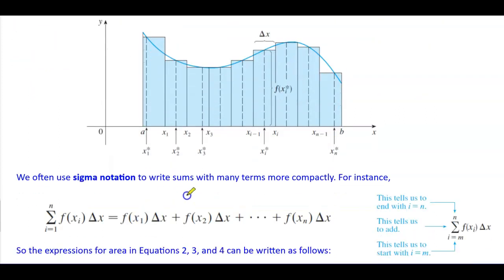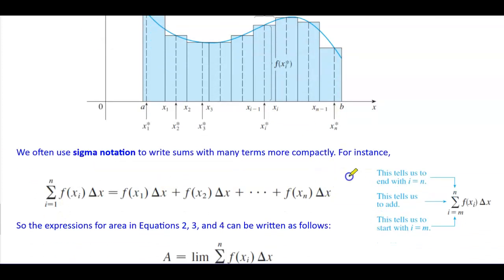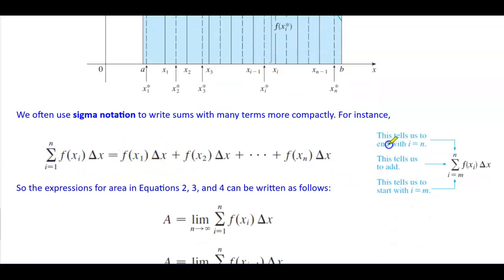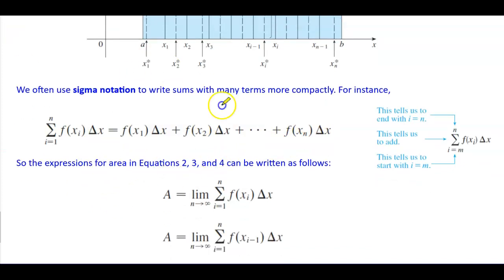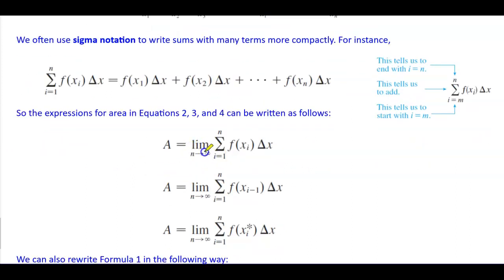We often use sigma notation to write sums with many terms more compactly. The summation notation has the upper limit n — telling us to end with i equal to n — the sigma sign telling us to add all terms, and the lower limit i equals m telling us where to start. The summation from i equals 1 to n of f(x subscript i)·Δx equals the height times the width, plus height times width, and so on. The area expressions from equations 2, 3, and 4 can be written as: A equals the limit as n approaches infinity of the sum from i equals 1 to n of f(x subscript i)·Δx.